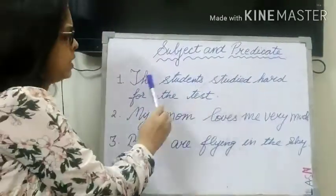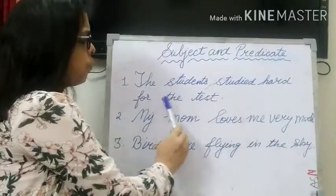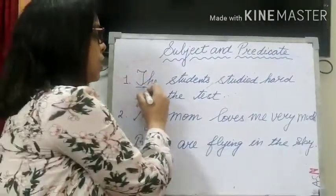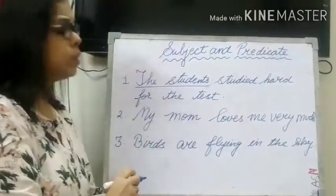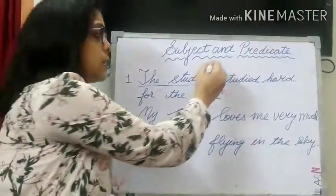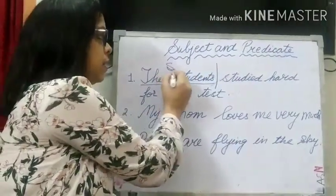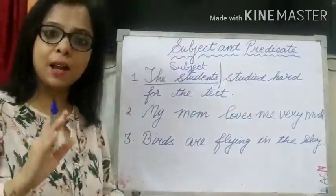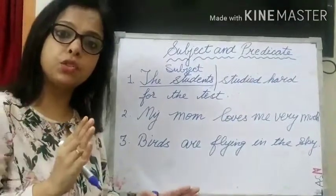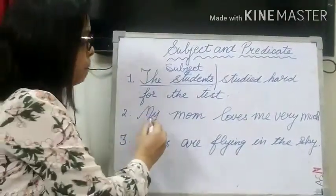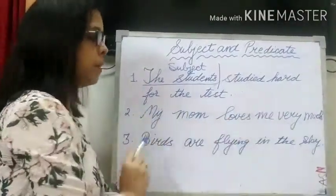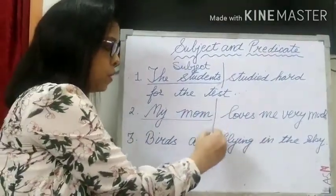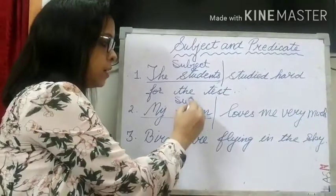Like in this sentence — the students studied hard for the test — about whom are we talking? We are talking about the students. So the students is the subject. Subject is that part of the sentence about which we talk. In the sentence 'My mom loves me very much', we are talking about my mom, so my mom is the subject.